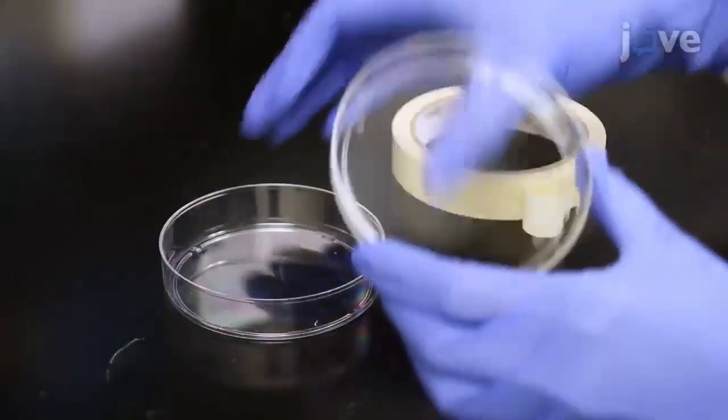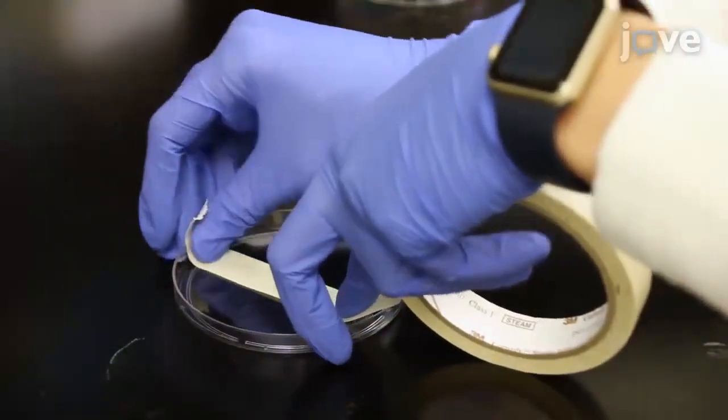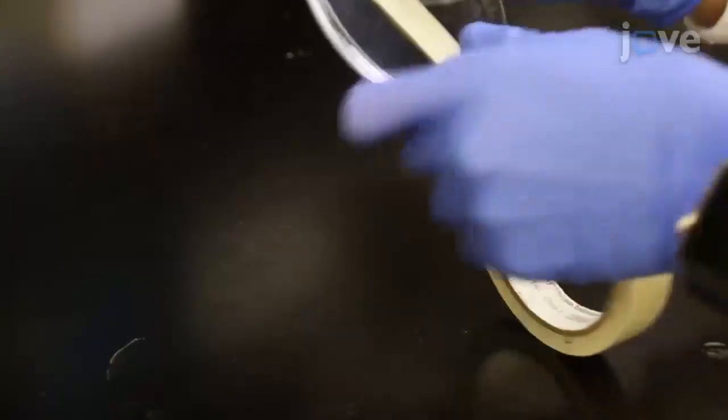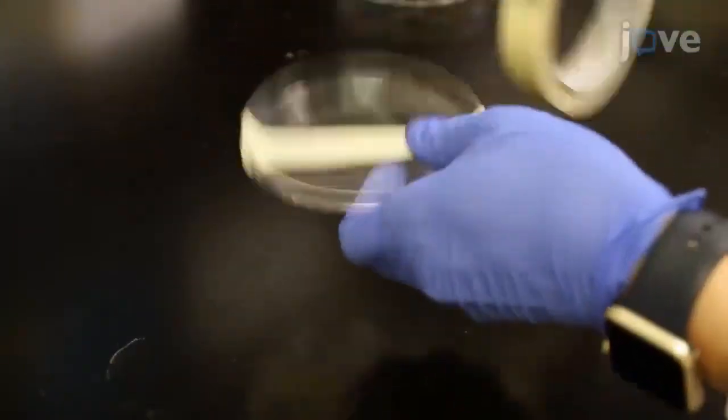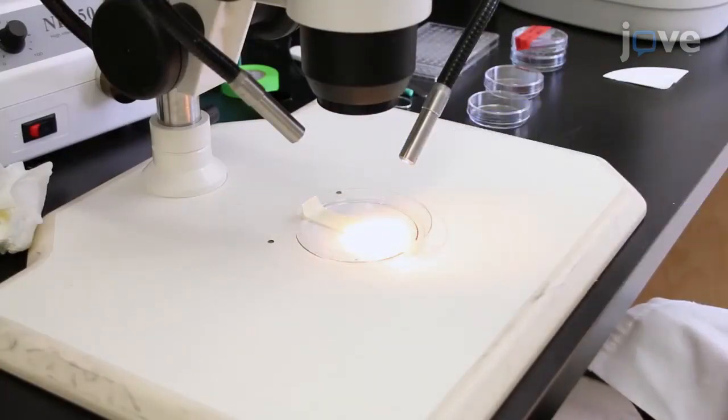Prior to starting the fin clipping of the zebrafish larvae, prepare the dissection surface. Tape a piece of autoclave tape across the interior surface of a 9 cm petri dish lid and position the lid under a stereo microscope.